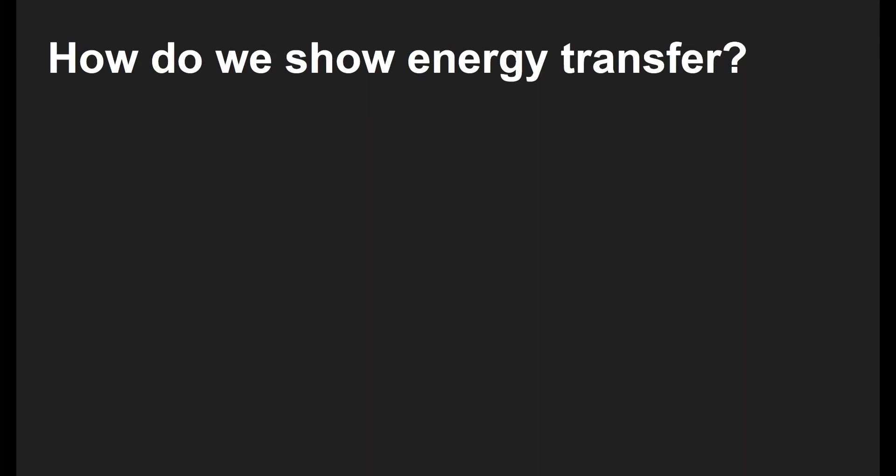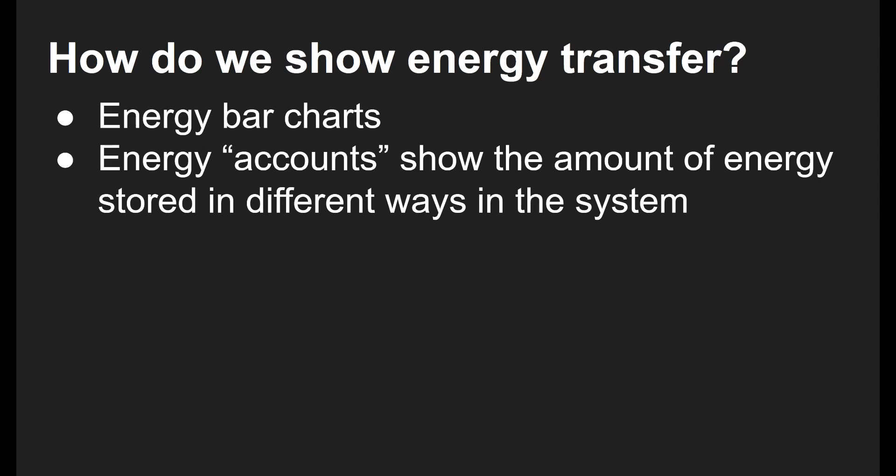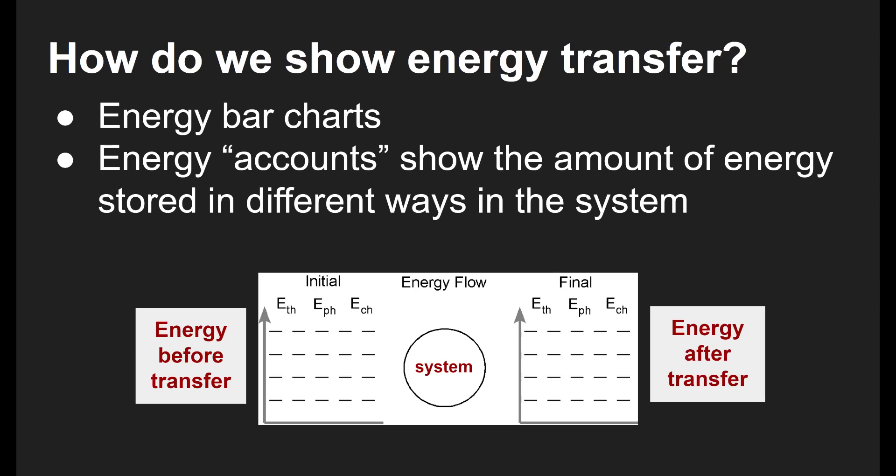All right, so how can we show this? In an energy bar chart, we basically keep track of the accounts. Remember, that was our second metaphor for energy—it's like different types of bank accounts. We can transfer the energy like money between different accounts. And this is what the bar chart looks like. So we have the system in the middle, and then the left side is the energy before the transfer. And the right side is the energy after the transfer. And then we'll use bars to show how much energy there is and arrows to show how it flows in and out. And this is easiest to show if we use an example.